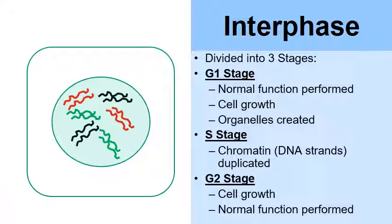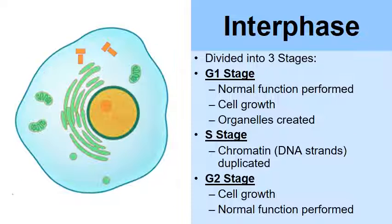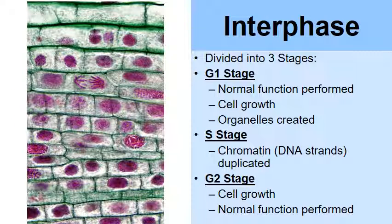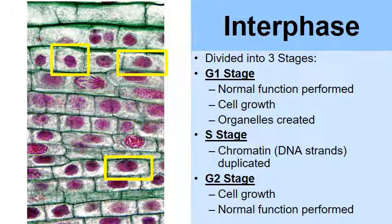After the S stage comes the G2 stage — the second growth or gap stage. The cell continues performing its normal functions and prepares to enter mitosis. In an artist's drawing of an interphase cell, you can see the nucleus is still intact — that's a telltale sign of interphase. Many cells in this picture are interphase cells, all with their nuclei still intact.